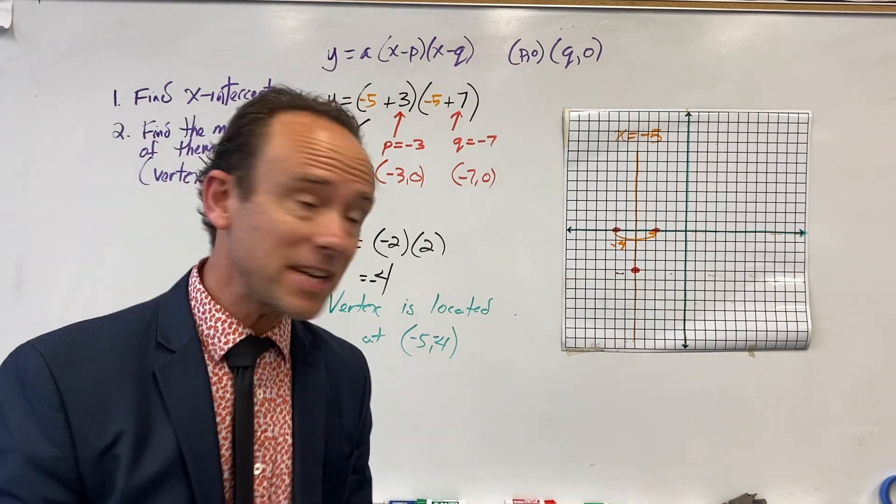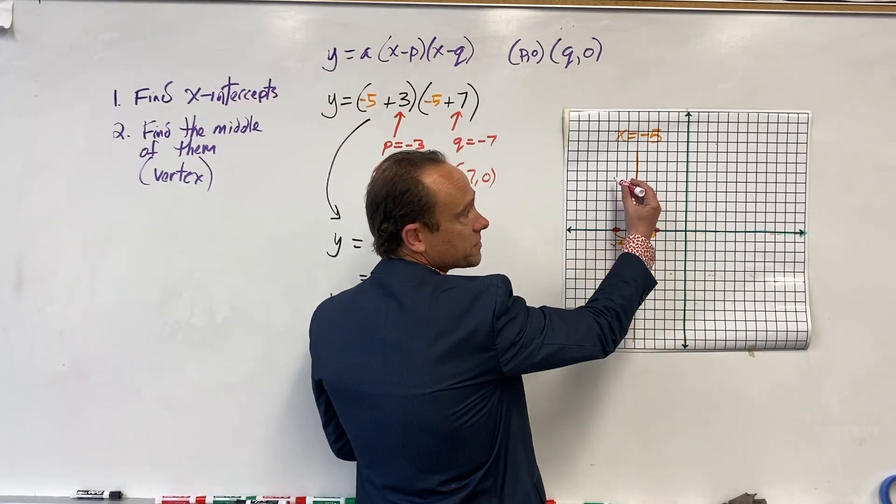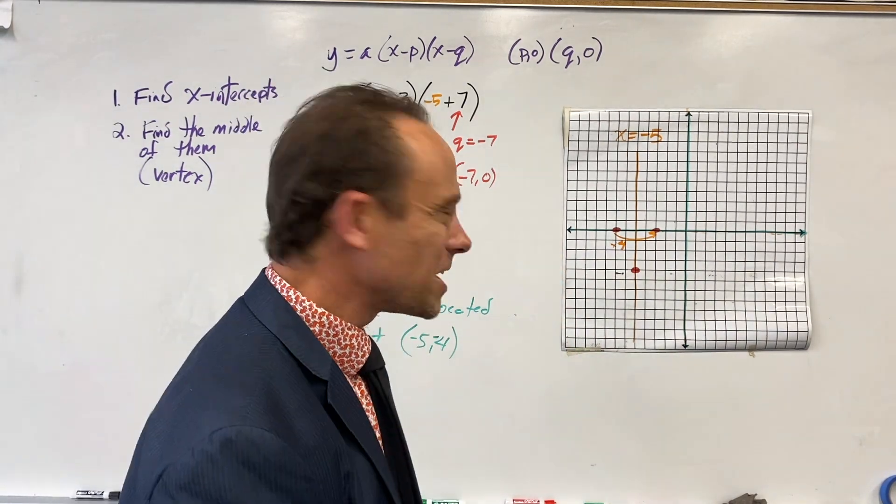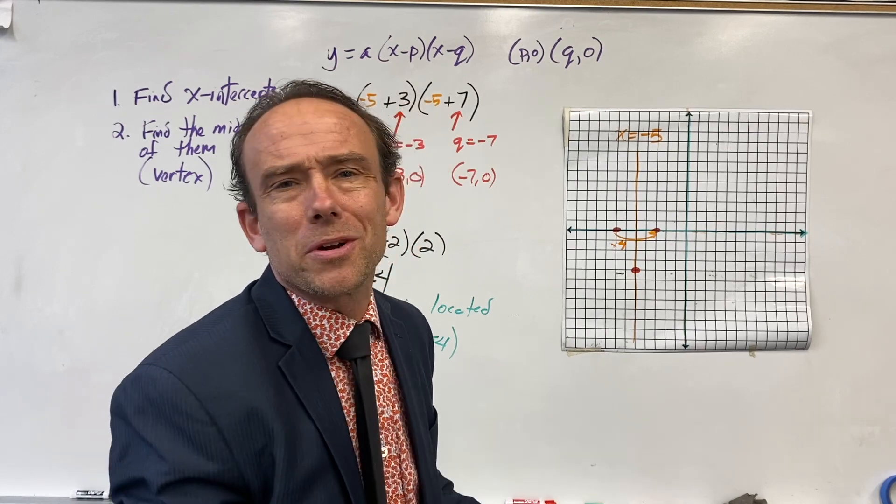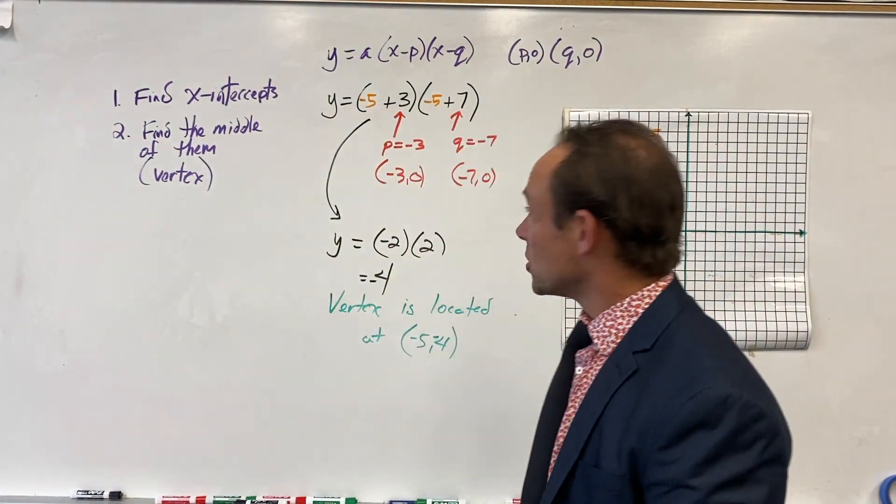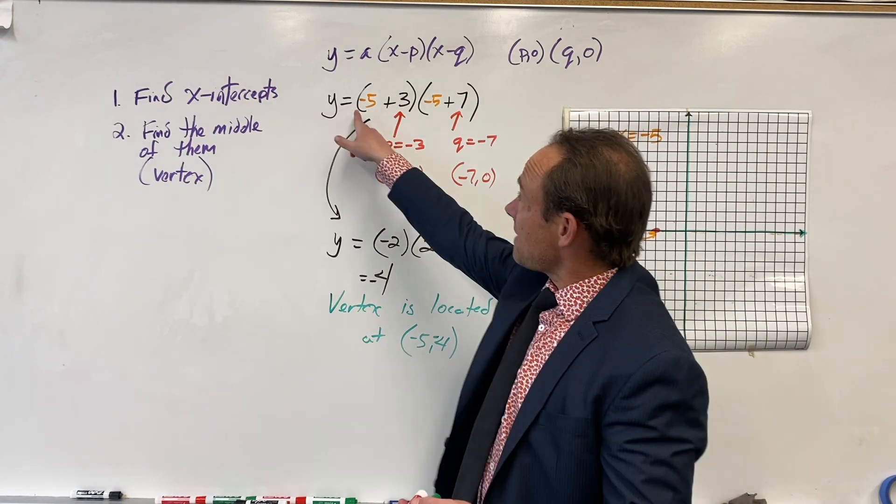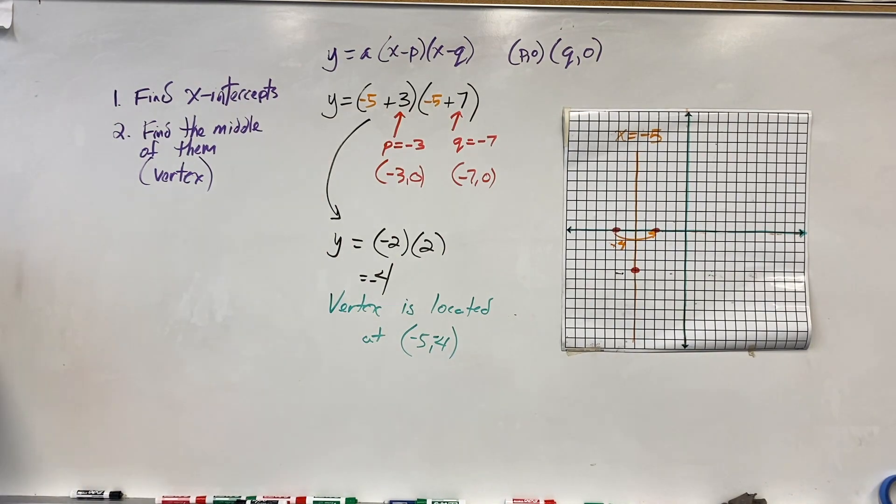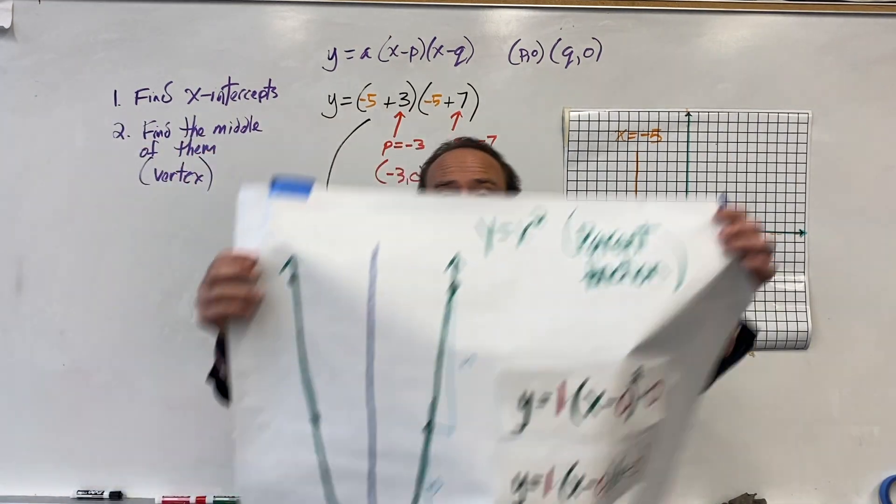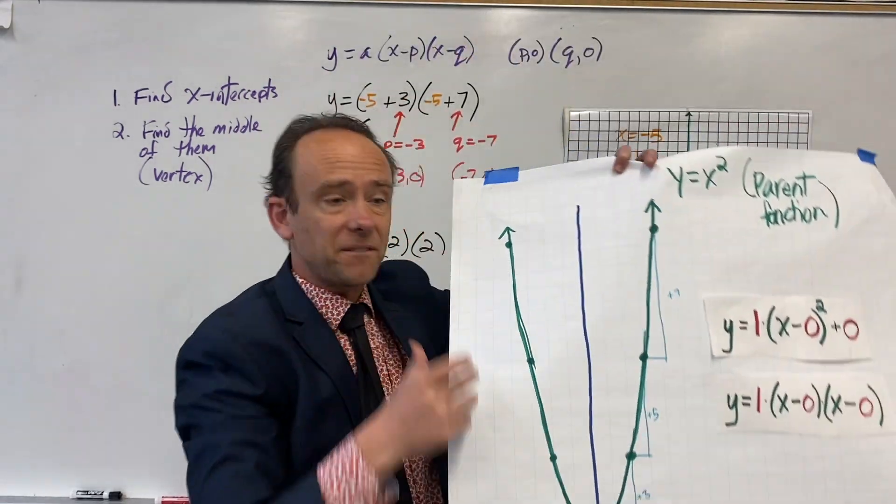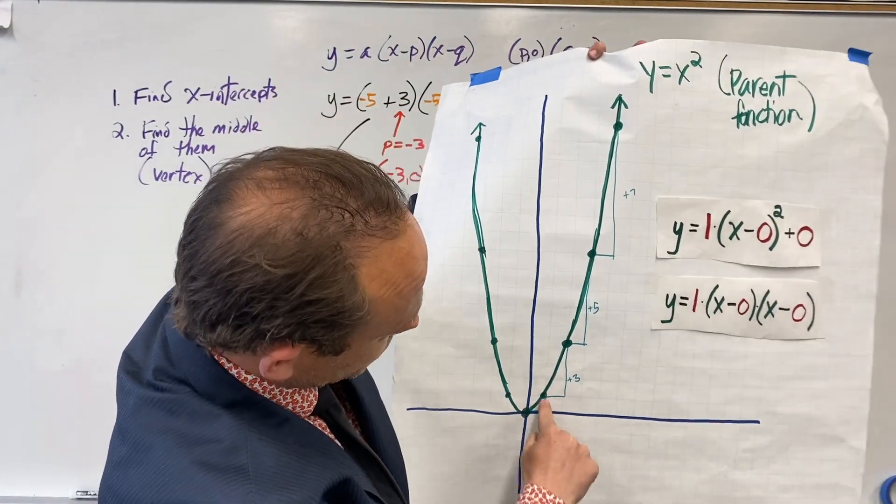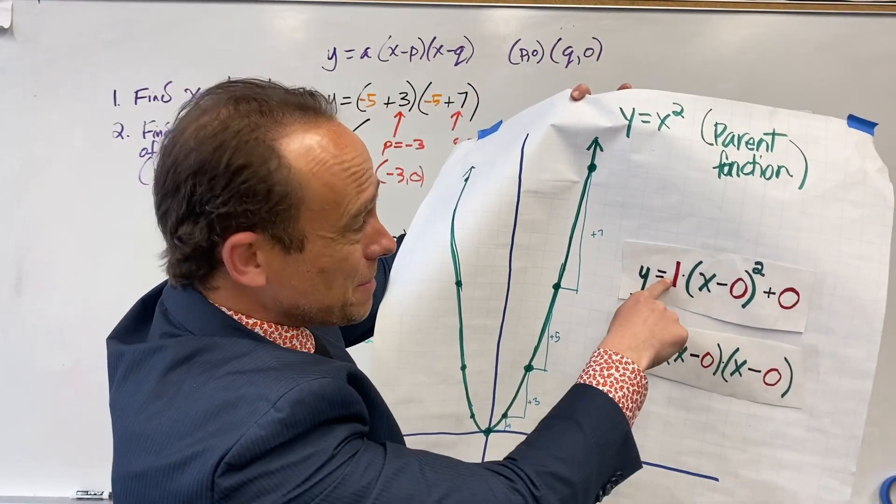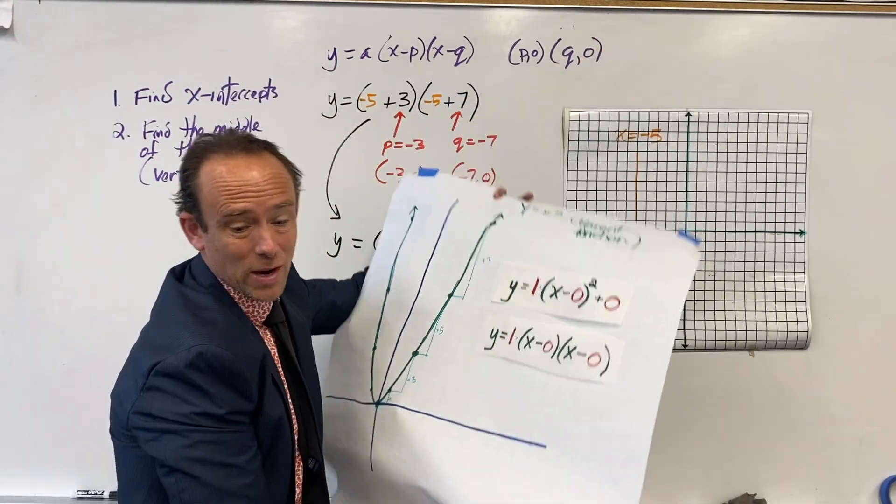There's the vertex. I would recommend putting a couple extra points just to make it prettier. The a value is 1, so when that happens it's called the parent function and the parent function always follows the same pattern: it goes over 1 up 1, over 1 up 3, over 1 up 5, over 1 up 7. Anytime a is 1 we follow that pattern.